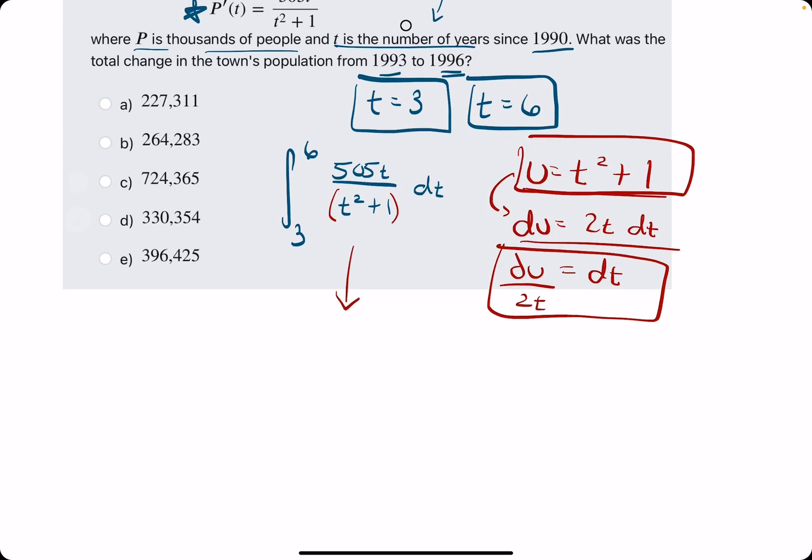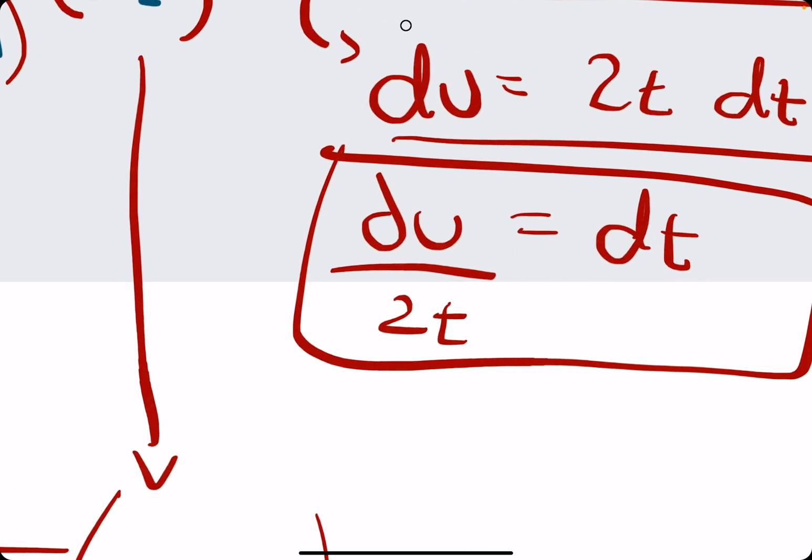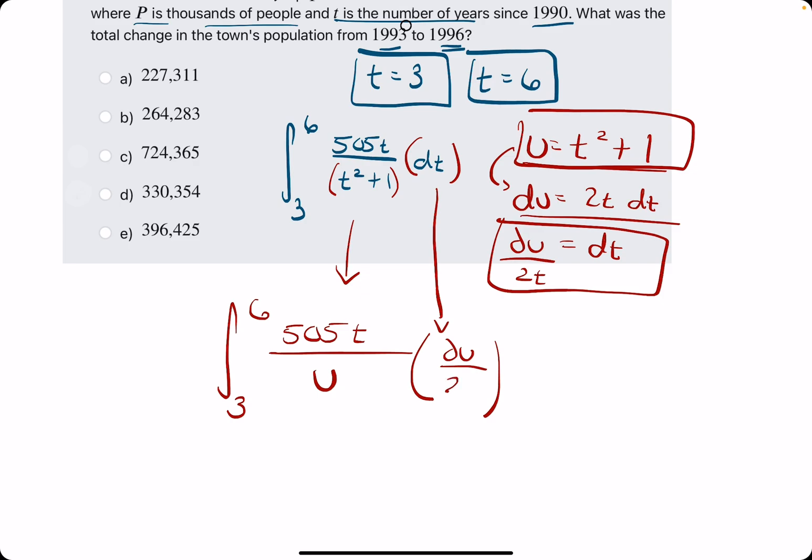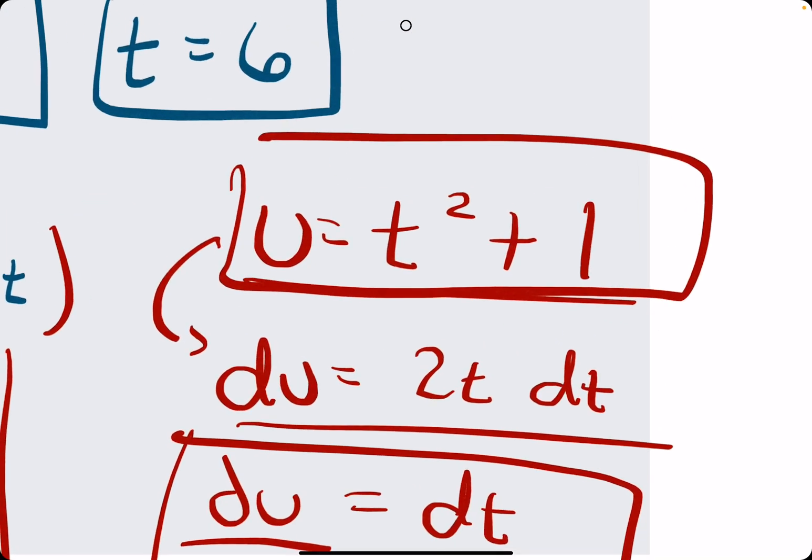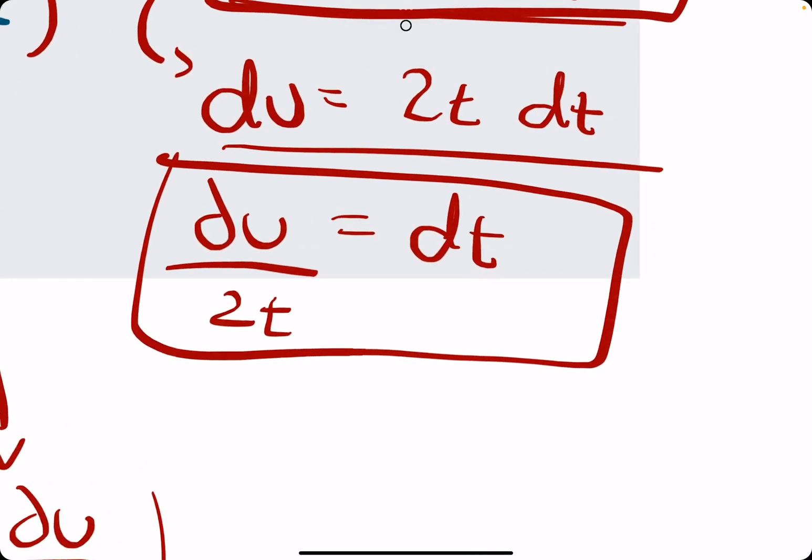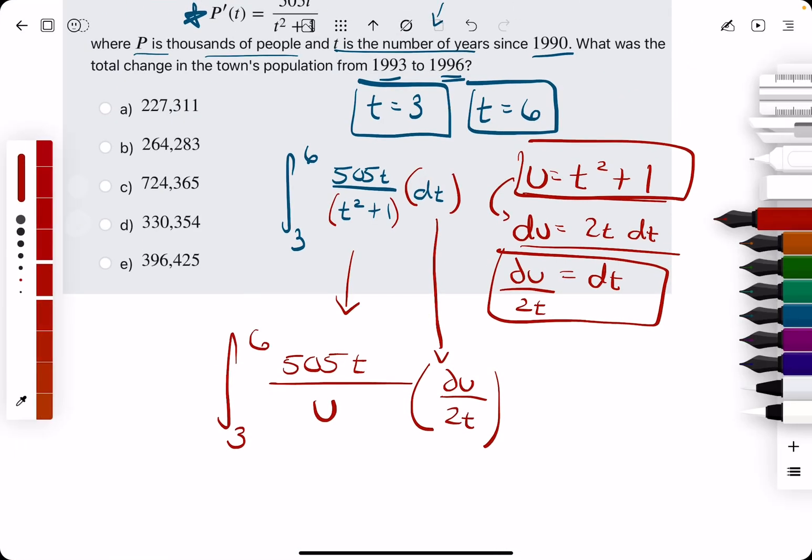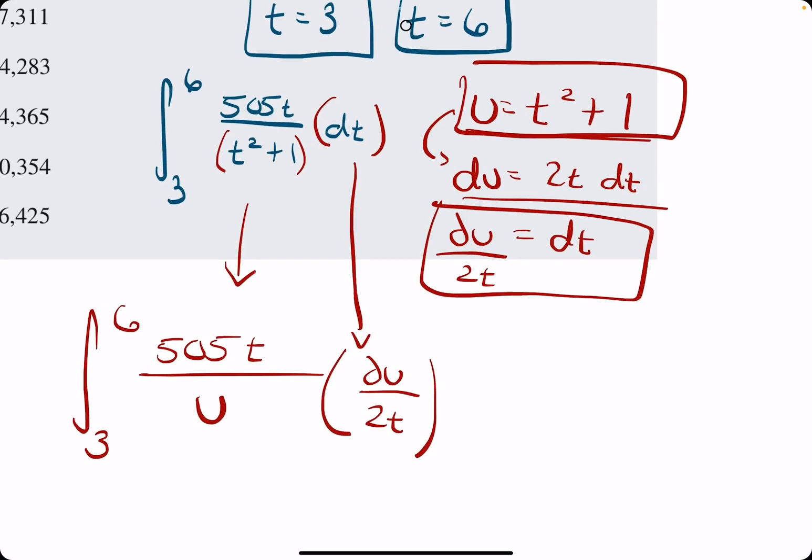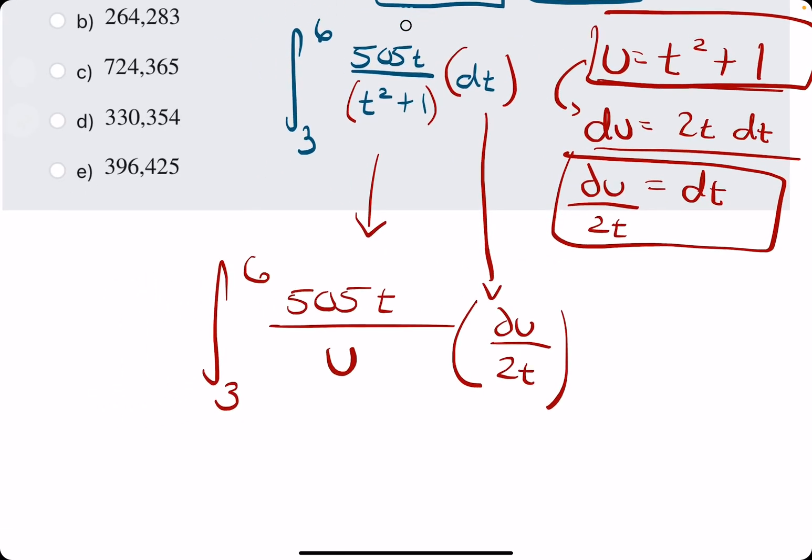So now we have U and DT, and this allows us to rewrite the integral. We'll leave the 505T. We'll replace the T squared plus 1 with U. And an important step we cannot forget is replacing DT with DU over 2T. It's in doing both of these substitutions that we can simplify this integral so that there are no longer any T terms.